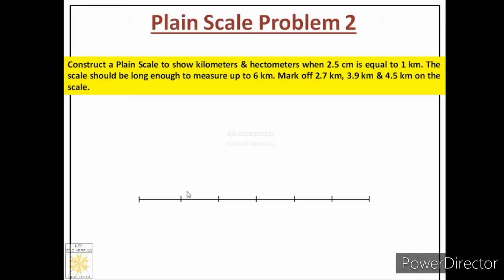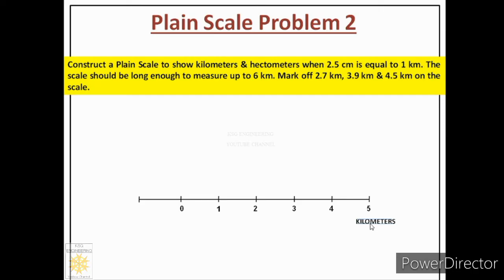After this we label the markings. We start from the second point of the scale and mark it as 0. Since each part represents 1 kilometer, we label the divisions 1, 2, 3, 4, 5. Below the scale we write 'kilometers' using two guidelines, with the letter height of 5 millimeters, written in Gothic style.